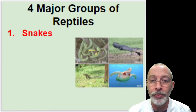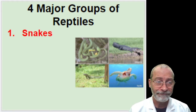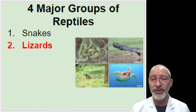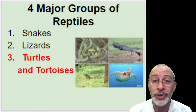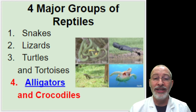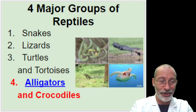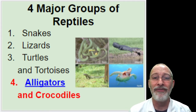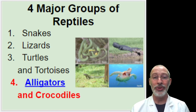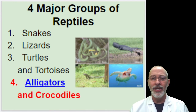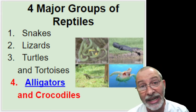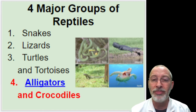There are four major groups of reptiles. The first are snakes, the second are lizards, the third include turtles and tortoises, and finally the fourth are alligators and crocodiles. This video today will be a little bit shorter because I'm going to have you watch some other videos, including one about alligators, which I think you'll find interesting. There are differences between alligators and crocodiles, and you'll be able to see those differences in the videos.